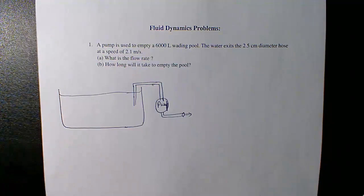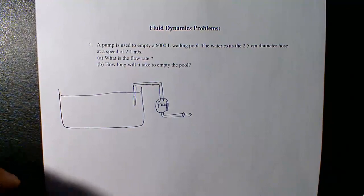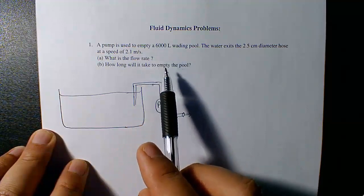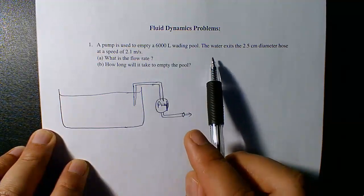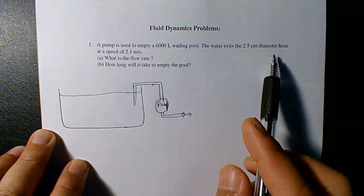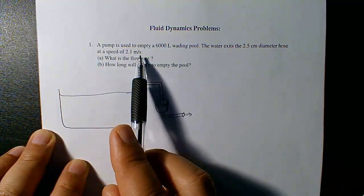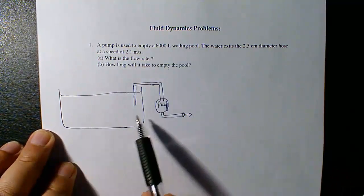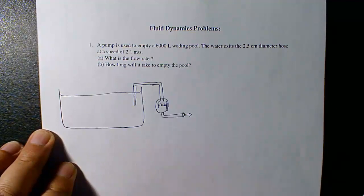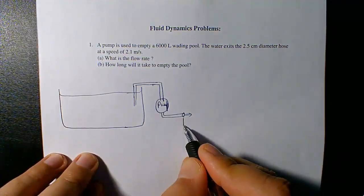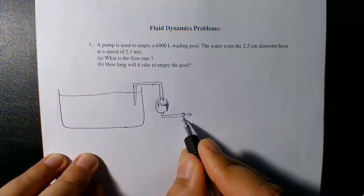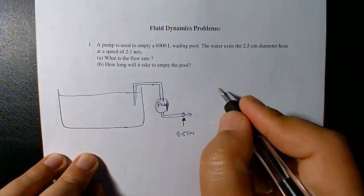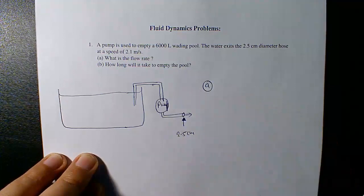Here are some examples on flow dynamics problems. The first problem: a pump is used to empty a 6,000 liter wading pool. The water exits a 2.5 centimeter diameter hose at a speed of 2.1 meters per second. What is the flow rate and how long will it take to empty the pool? The pump empties the pool and the diameter of the exit pipe is 2.5 centimeters.